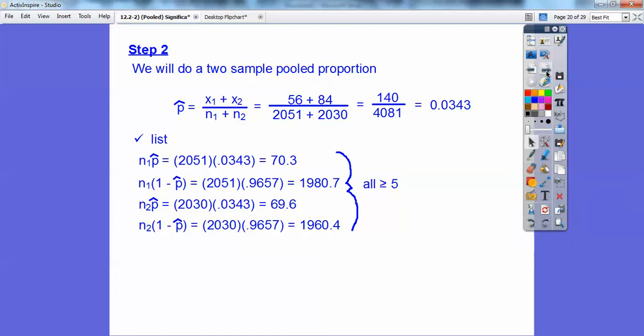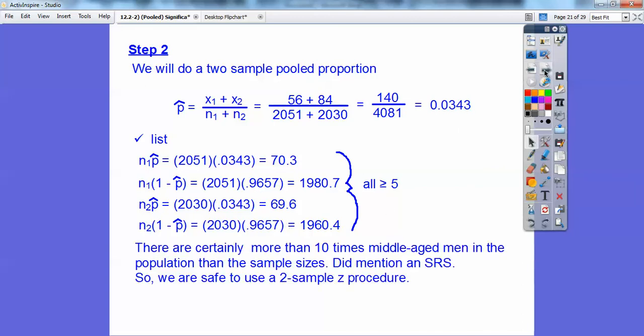That's the number we're going to plug in. Let's do our checklist. So the sample size times the pooled P hat, the sample size times 1 minus the pooled P hat, and then this sample size, and then this sample size. We just got to make sure that they're all greater than 5. And it did say in there, well, there's certainly more than 10 times the middle-aged men in the population than the sample sizes. But it did say it was a random sample, a simple random sample. So we're safe that we don't even need to say we're going to proceed with caution. Everything checks off here.